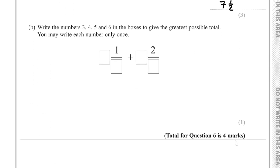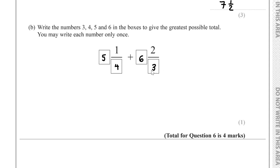For part B, we have to write the numbers 3, 4, 5, and 6 in the boxes to give the greatest possible total. We want to use 5 and 6 for the whole number parts, so we put 5 here and 6 here, with 3 and 4 as the fraction numerators — or equivalently 5 and two thirds plus 6 and a quarter would give the same answer.